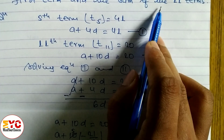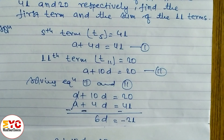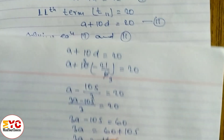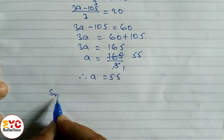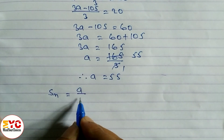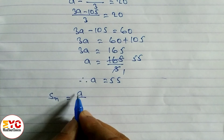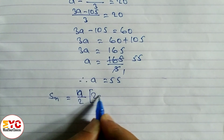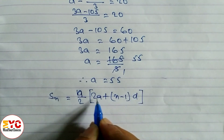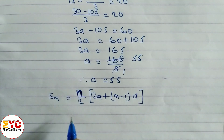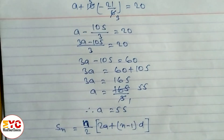After finding A, the question also asks us to find the sum of 11 terms. For the sum of 11 terms, we use the formula SN equals N by 2 times (2A plus (N minus 1)D). The value of N is 11, since we want the sum of 11 terms.